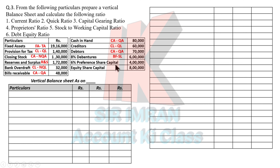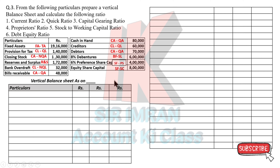Preferential capital comes under shareholder fund — there are two separate entries in shareholder fund: share capital and preference share. Preferential capital and equity share capital will both appear under shareholder fund as share capital. In share capital we add reserve and surplus to get the equity shareholder fund, also called net worth or own fund — that is required in your proprietary ratio. Now we will prepare the vertical balance sheet, starting with sources of fund, i.e., liabilities. The first heading is shareholder fund.